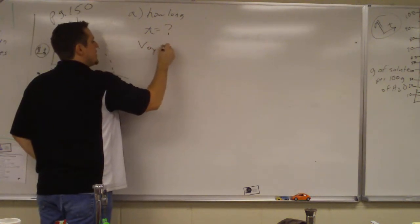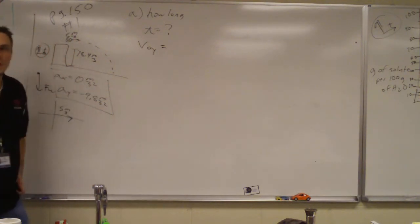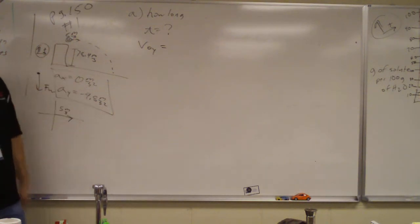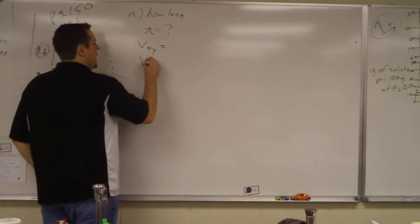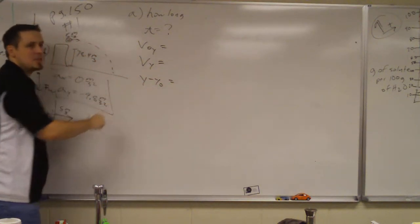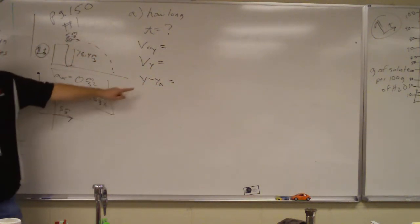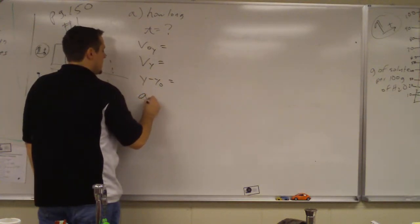So we're going to write all the five variables for the y direction. Initial velocity in the y, and now you have to write the y. Why do you have to write the y? Because there's stuff going on in the x. You don't want to get confused. Final velocity in the y. Displacement. Now you have to make those y's. You don't have a choice anymore. They have to be y's if you're talking about the y direction. And acceleration in the y.